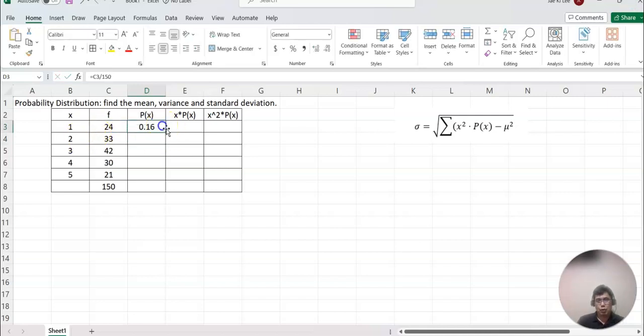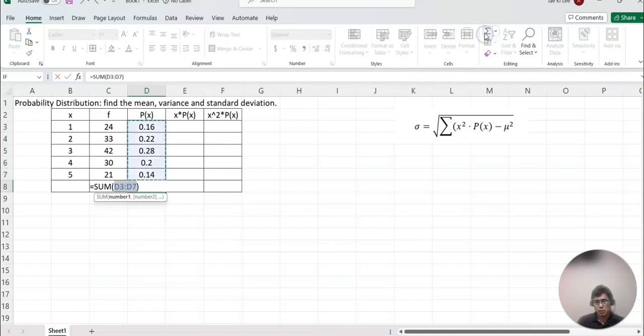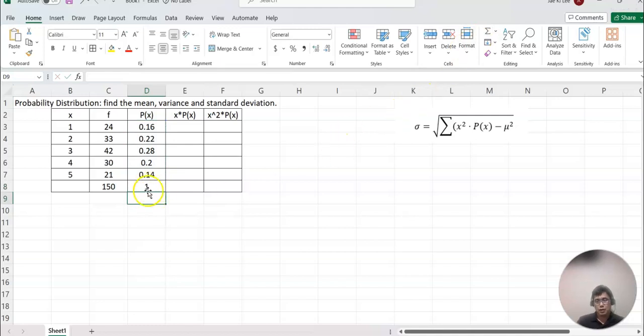Now we go back and copy down. Let's make sure this is the right value. Click autosum. It's 1. This means it is the right probability value.